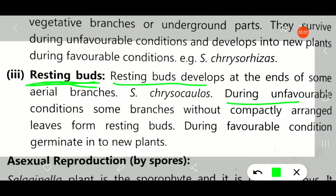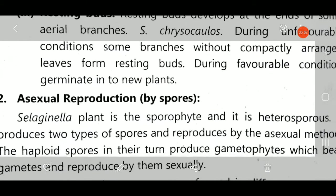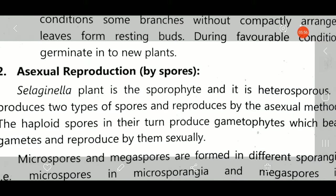In resting buds, there are a few branches on the Selaginella plant where no more leaves are compactly arranged. At the tip or end of these branches, resting buds form. When favorable conditions are available, these resting buds germinate into new plants. This is the third type of vegetative reproduction, known as resting buds. Next is asexual reproduction.